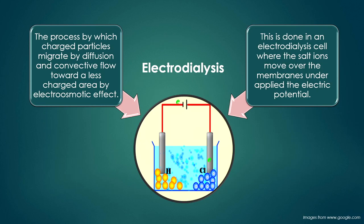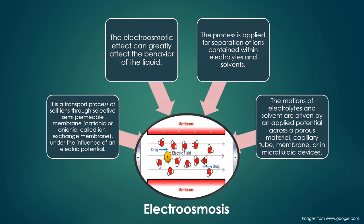Electrodialysis is the process by which charged particles migrate by diffusion and convective flow towards a less charged area by electro-osmotic effect. This is done in an electrodialysis cell where salt ions move over membranes under an applied electric potential. Electroosmosis involves transport of salt ions through selective semi-permeable membranes — cationic or anionic (ionic membranes) — under the influence of an electric potential, driven by an applied potential across porous material, capillary tubes, or membranes.